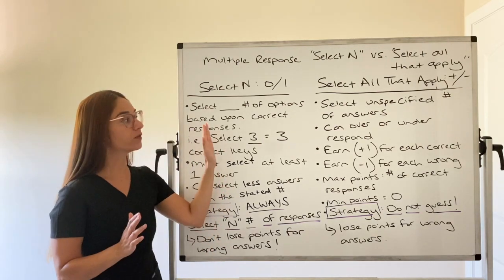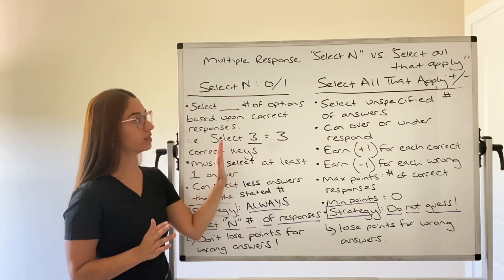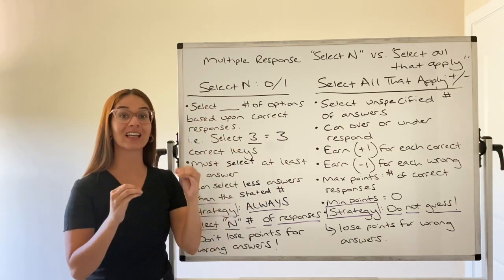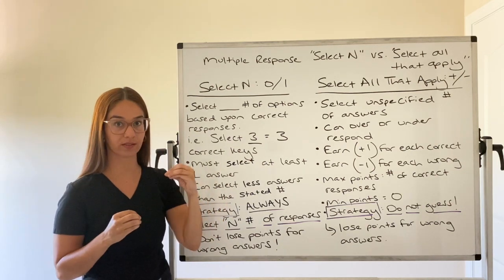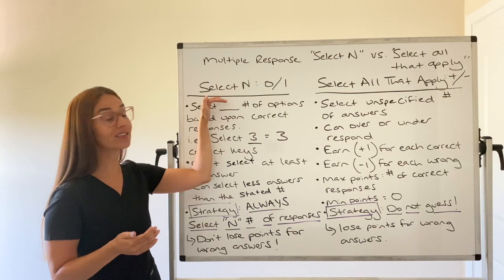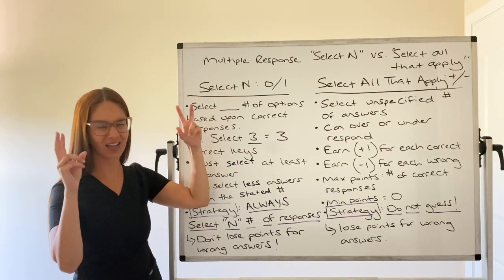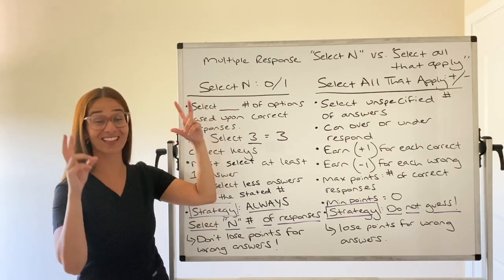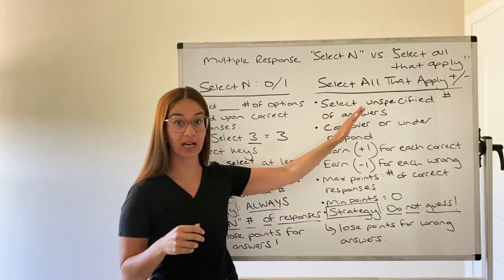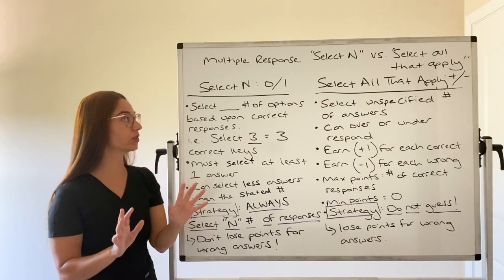So you have two different questions. One could have a question that says select the best three responses or select the best four responses. That is considered a Select N question. This is a different scoring model than Select All That Apply. So let's just review the two.